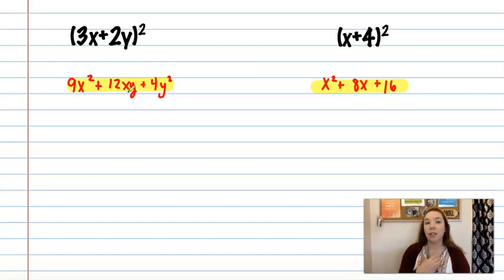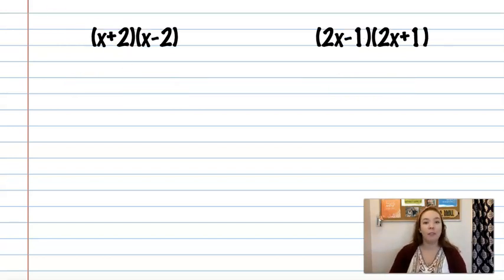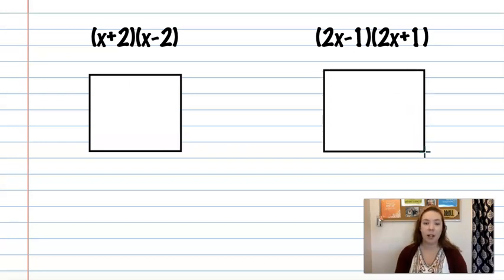There is one more shortcut that I do actually think saves us quite a bit of time, and will be handy when we move on to factoring as well, is when you have a difference of two squares, where you have the same thing except one is addition and one is subtraction. So let's first multiply it out the old way with the box method so we can find a pattern, and then I'll tell you what the pattern is.